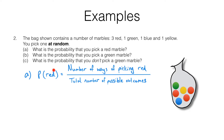The event is picking a red marble. There are three ways of picking a red marble — you can pick either this one, this one or this one. So we've got 3 over the total number of possible outcomes. There are six marbles so there are six possible outcomes, giving us three sixths, which we can simplify to a half.